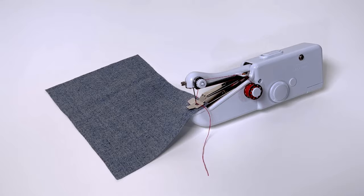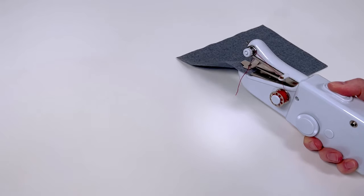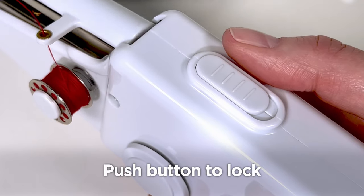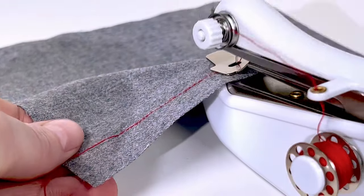With your fabric now in place, you can begin sewing, holding the product in your right hand and fabric in your left. Simply push and lock the button in position to sew. All fabric will naturally feed through the machine.